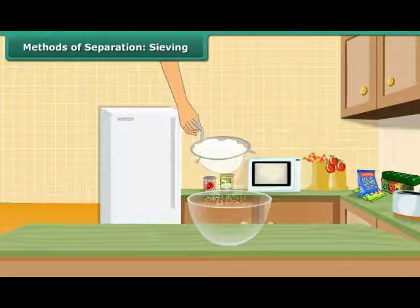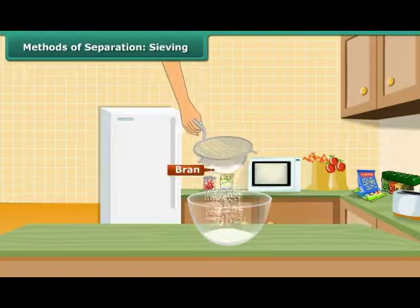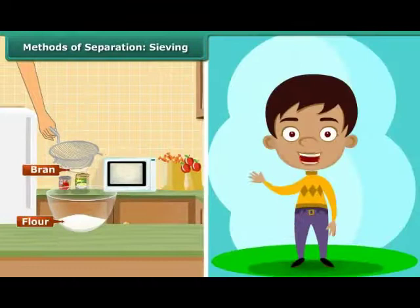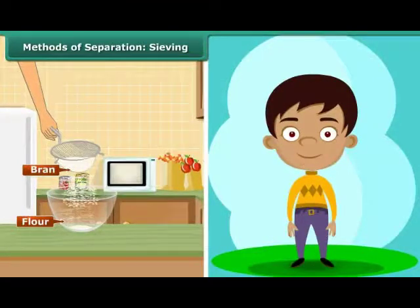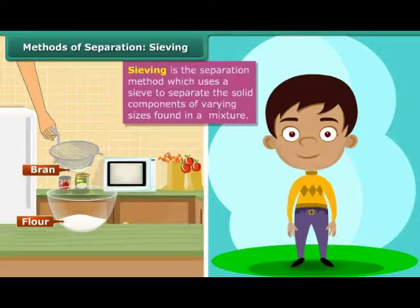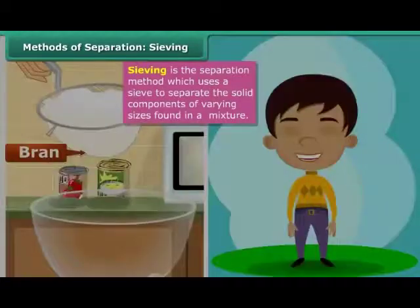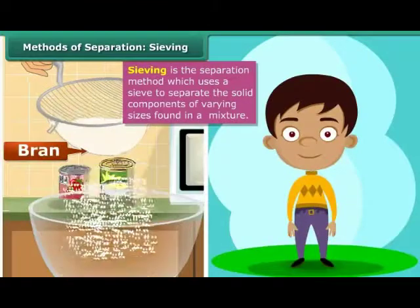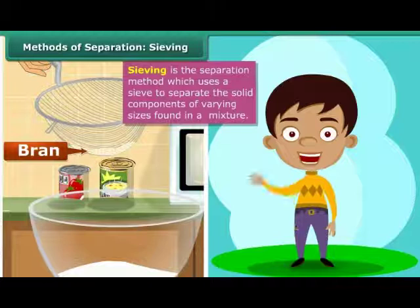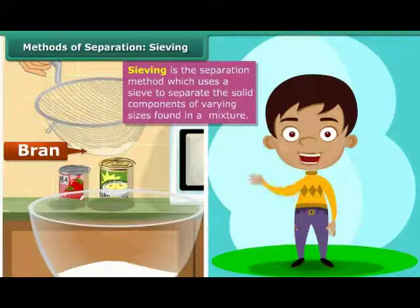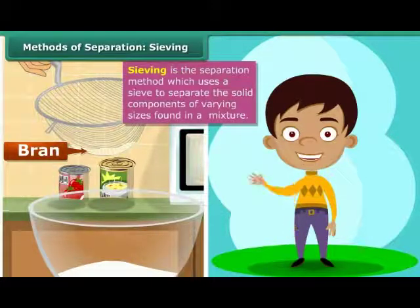Children, have you seen how your mother removes bran and other impurities from flour? They separate the coarse bran from the fine flour with the help of a sieve. This technique of using a sieve to separate the solid components of different sizes in a mixture is known as sieving. In this method, the mixture is placed on the sieve and shaken. Smaller particles pass through the holes of the sieve to the container placed below and are thus separated from the bigger particles that are retained in the sieve.